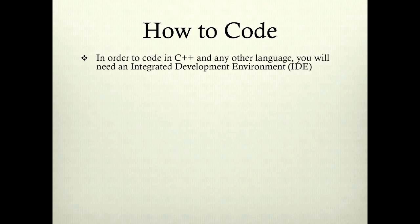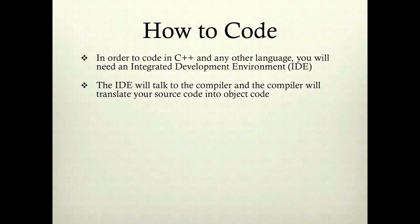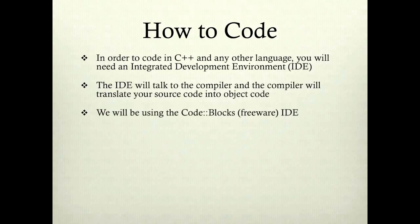In order to code in C++ and any other language, you will need an integrated development environment, also known as an IDE. The IDE will talk to the compiler, and the compiler will translate your source code into object code. Remember, C++ is the compiler — C++ is what translates the source code into object code.